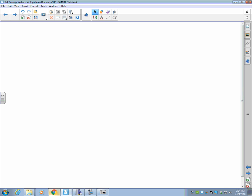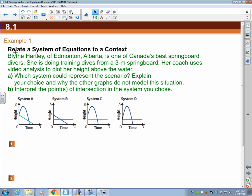When it's quadratic systems, we'll look at the next one. This is a systems of equations to a context. Blythe Hartley, this lesson was done when she had just won an Olympic medal. Edmonton, Alberta is one of Canada's best springboard divers. She's doing training dives with a 3 meter springboard. Her coach uses video analysis to plot her height above the water. So, when we're doing this, there's some information here. The information that's important is her height above the water. When I'm looking at these graphs here, I have system A, system B, system C, system D. Which system could be used to represent the scenario? I don't know if you guys know how diving works, but I'm pretty confident everyone here has seen a dive. When you're on the diving board, you start here and then you jump and you go into the water. So you make a parabola in this case.